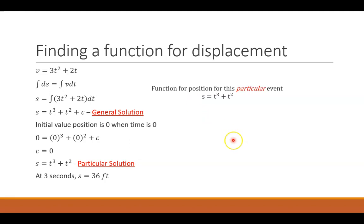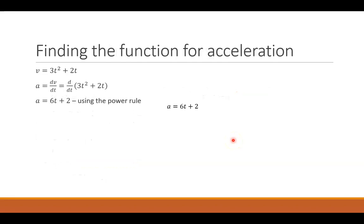Now let's move forward to find the acceleration. We take that velocity function and take the derivative. Using the power rule — the sum of the derivatives equals the derivative of the sum — we end up with acceleration as a function: 6t plus 2. We didn't need the initial value for that; we just needed it for the constant of integration. So now we have a function for the acceleration, the velocity, and the displacement, and we can find everything at three seconds.